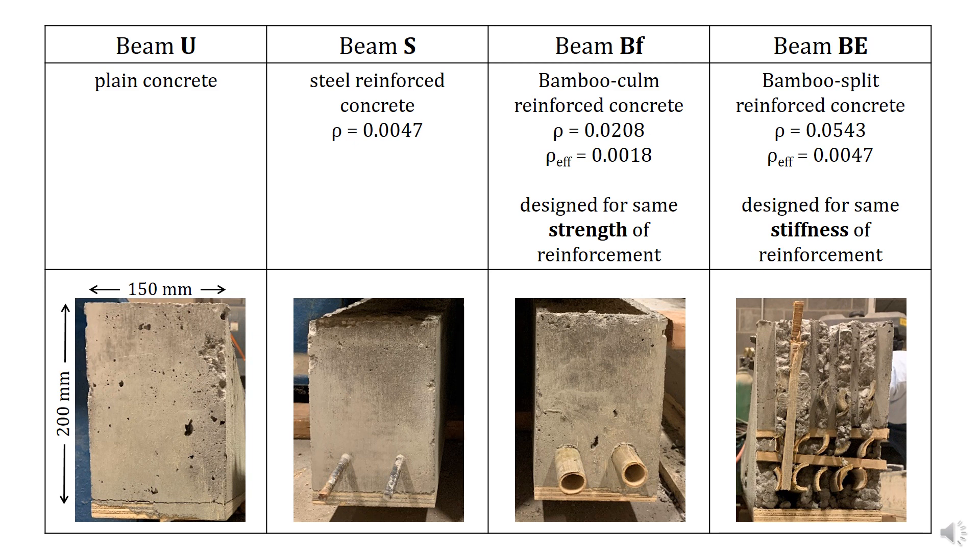Beam U is plain unreinforced concrete. Beam S is steel-reinforced concrete, having a reinforcement ratio of 1.5%, typical of an under-reinforced concrete beam.